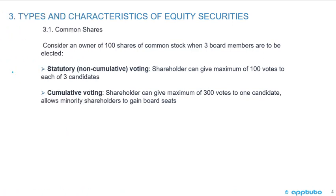Continuing with common shares, we're going to look at the difference between statutory non-cumulative voting and cumulative voting. Consider an example: an owner has 100 shares of common stock and three board members are to be elected. If the shares are statutory non-cumulative voting, the shareholder can give a maximum of 100 votes for each of the three candidates. If it's cumulative voting, a shareholder can give a maximum of 300 votes to one candidate, and this allows minority shareholders to gain board seats.